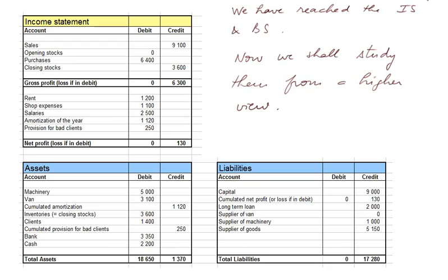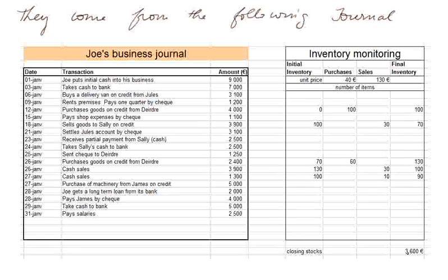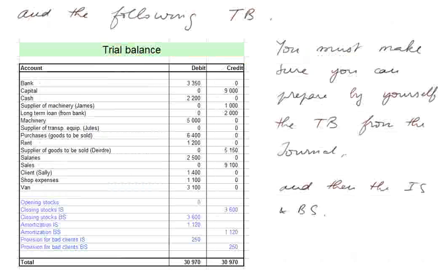These numbers here come from the following journal. I changed once again a little bit the numbers. And we have next to the journal the inventory monitoring sheet, essentially to compute the closing stocks. From the journal, we produced the following trial balance with the normal accounts. And we added some adjustments.